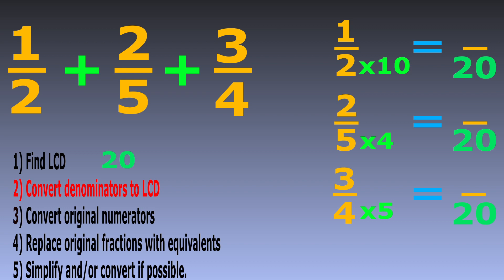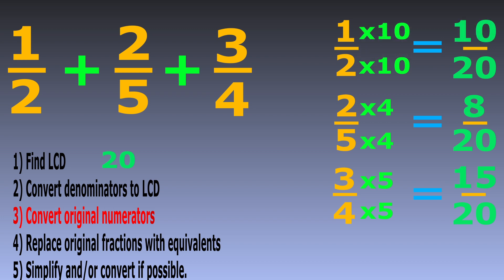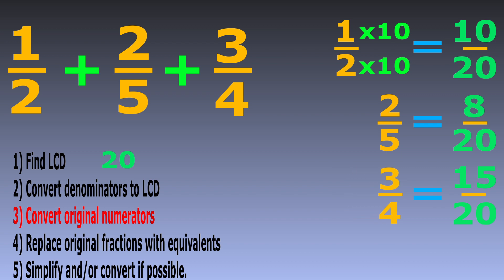Step 3: to keep the fractions the same value, we multiply each numerator by the same number used to multiply its denominator. We multiplied denominator 5 by 4, so we multiply numerator 2 by 4. We multiplied denominator 4 by 5, so we multiply numerator 3 by 5. We multiplied denominator 2 by 10, so we multiply numerator 1 by 10. So 2 over 5 is equivalent to 8 over 20, 3 over 4 is equivalent to 15 over 20, and 1 over 2 is equivalent to 10 over 20.